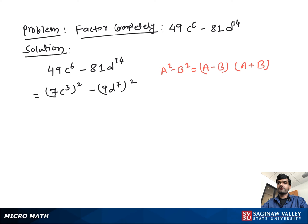If we suppose 7C cubed as A and 9D to the 7th as B, you can write this as 7C cubed minus 9D to the 7th times 7C cubed plus 9D to the 7th.